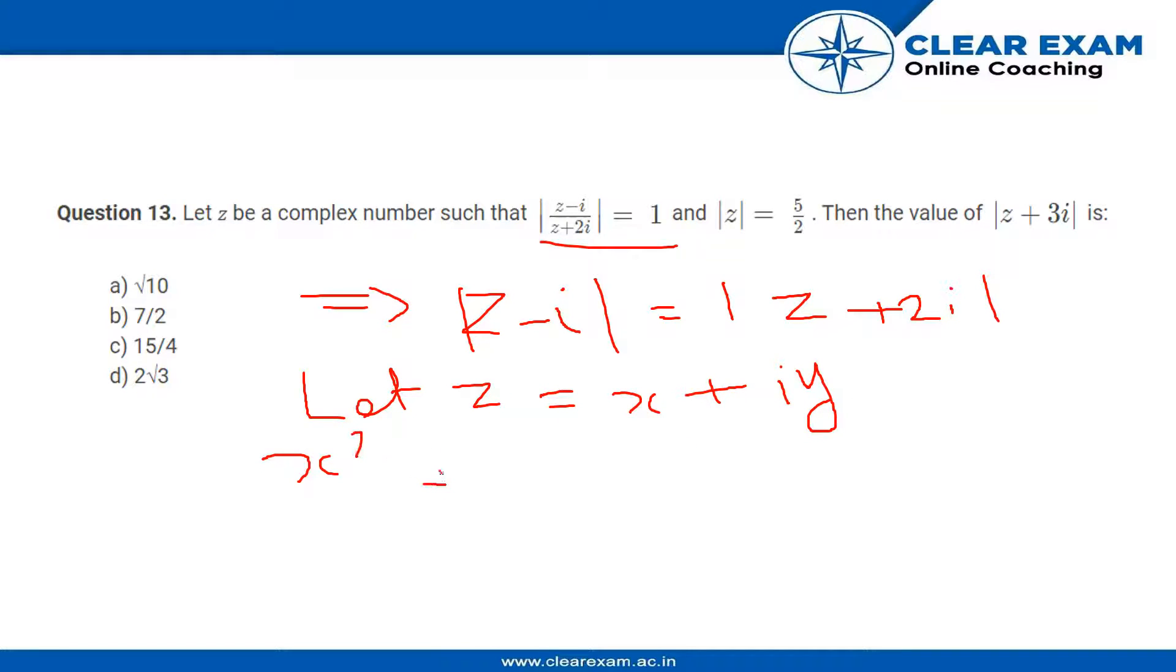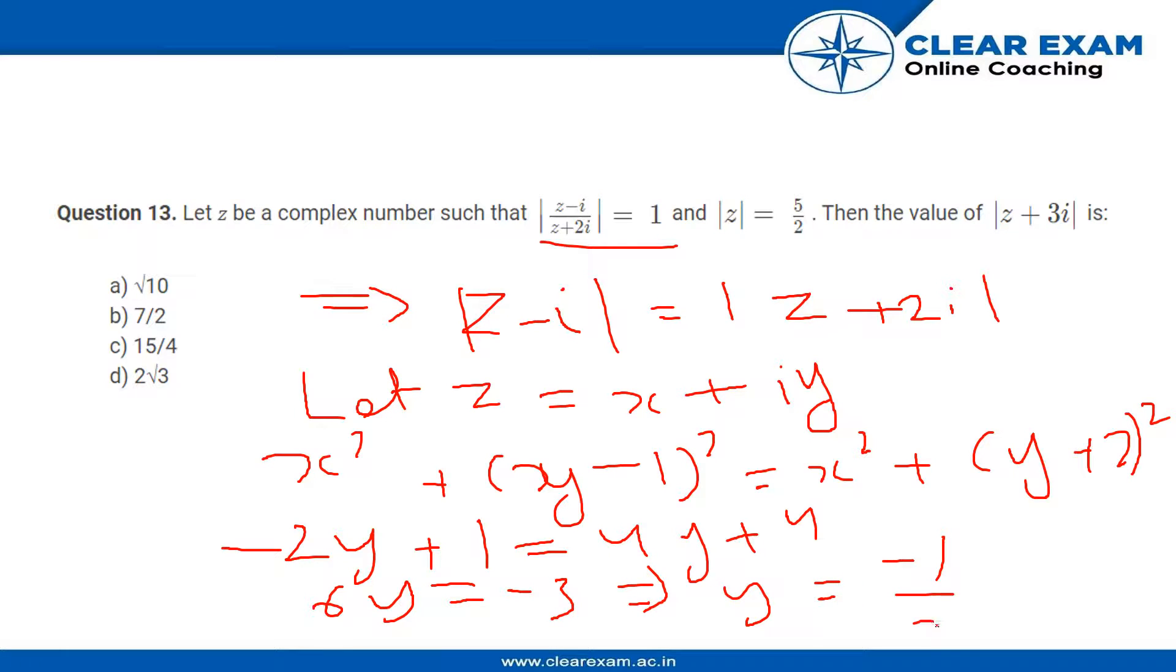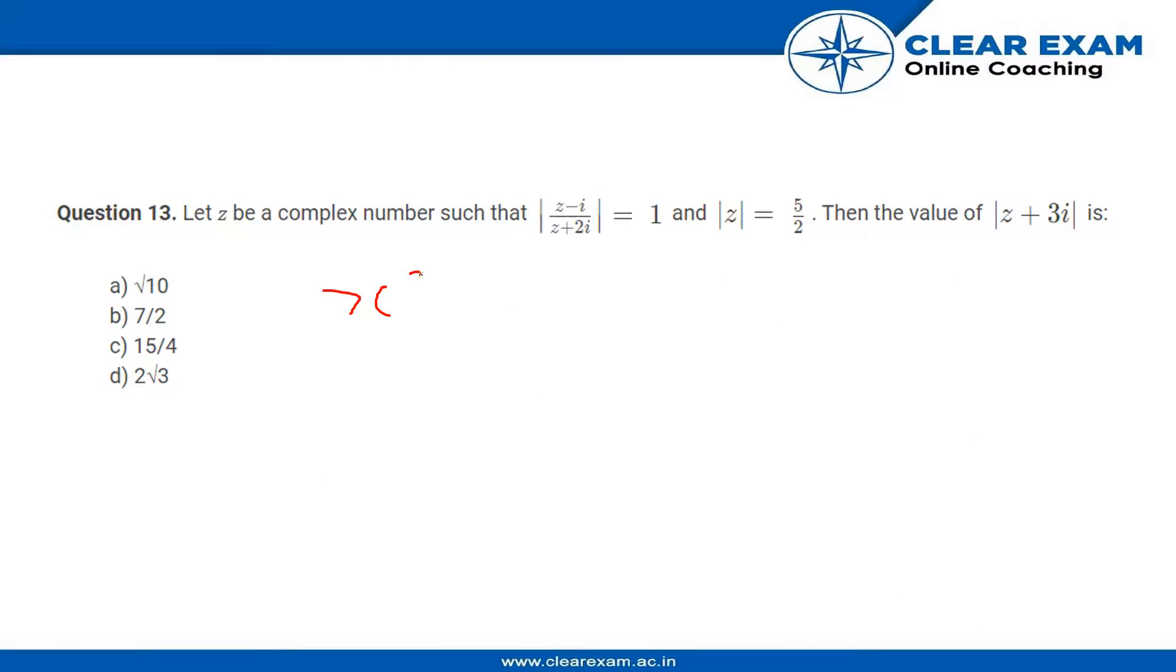So it will be x² + (y - 1)² = x² + (y + 2)². Expanding gives -2y + 1 = 4y + 4, so we get 6y = -3, which gives y = -1/2. So we find our y value.